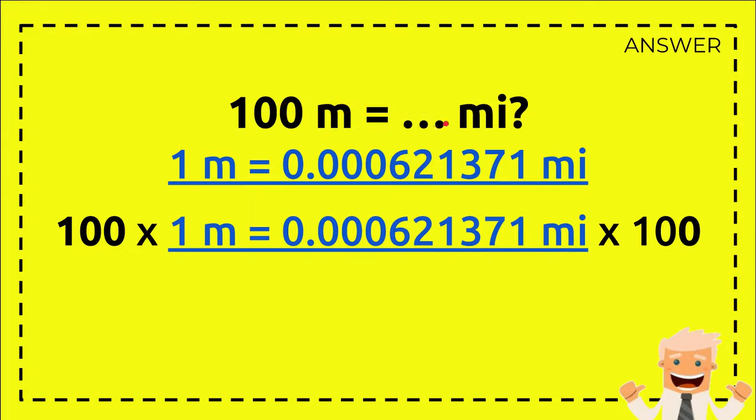And then, in this case we already have the formula, so 1 meter equals this number. Then we just need to put 100 here and multiply it with this number, and we need to use this 100 and put it here and multiply it with this number. Which is why now we have this line with this multiplication.